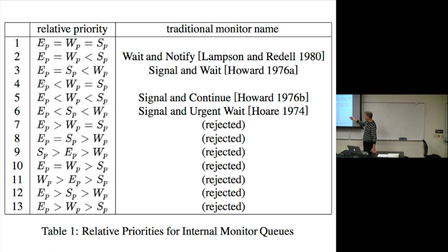Number three means the waiting queue has higher precedence than the signaler. Number four says the waiting and signaler have equal precedence but higher than the entry — higher than those waiting to get in for the first time. Then we also have E < W < S and E < S < W as further combinations.